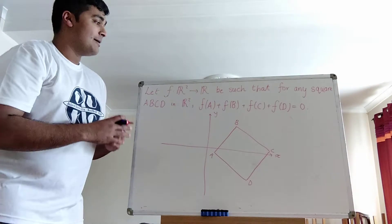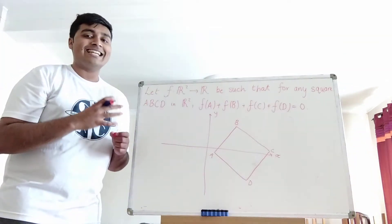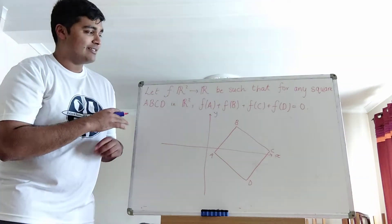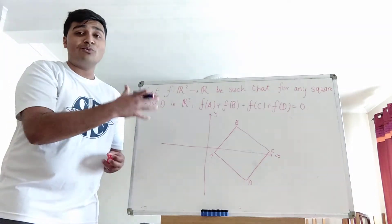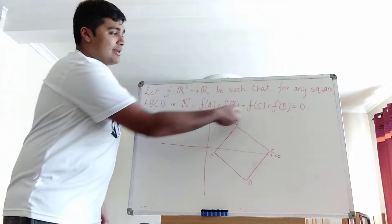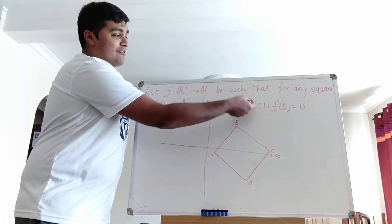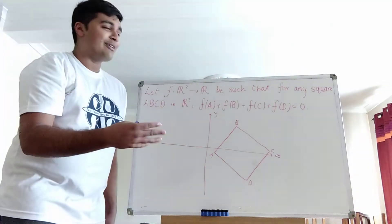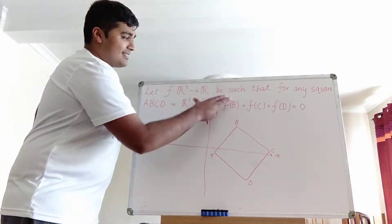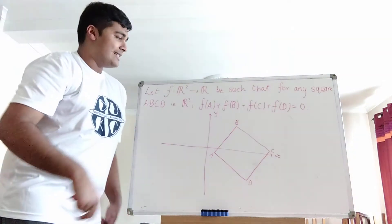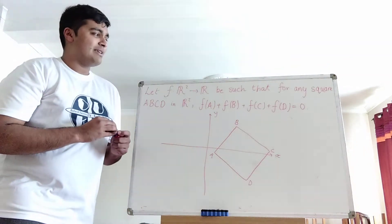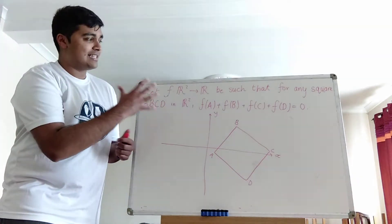Now the question is, must it be that f is identically zero, i.e. f is zero everywhere? Now of course, if f was zero everywhere, then certainly we'd have this property, because f(a) plus f(b), f(c) and f(d) are always zero, and hence this is going to be four lots of zero, which is obviously zero. But the question is, could there be any other function f which has this property?